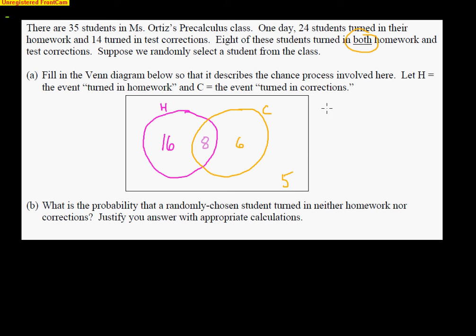Let me show you how we can use the formula. The probability of homework or test corrections: 24 out of 35 kids did their homework, plus 14 out of 35 kids did their test corrections. However, I do need to subtract away the 8 out of 35 who did both, because those 8 kids got counted for homework and for test corrections — it's not fair they get counted twice. Add all those together and subtract away, I get 30 out of 35. Which means 30 out of 35 kids did one or the other, and 5 kids did neither — so 5 out of 35 kids did neither.